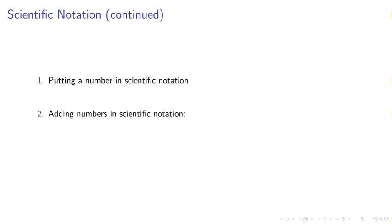Second, we can add numbers in scientific notation as follows. 5.4 times 10 to the 5th plus 3.2 times 10 to the 4th can be expressed as 5.4 times 10 to the 5th plus 0.32 times 10 to the 5th which is equal to 5.72 times 10 to the 5th.